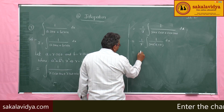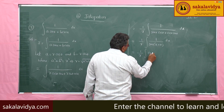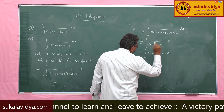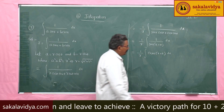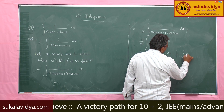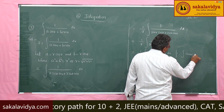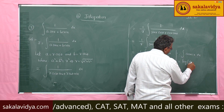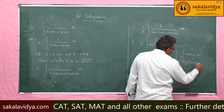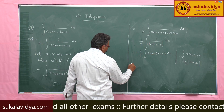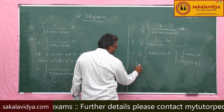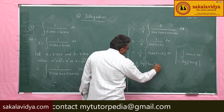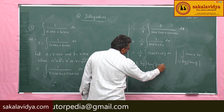This becomes 1/R times the integral of cosec(x + θ) dx. The integral of cosec x dx is log|tan(x/2)|. So this gives us 1/R · log|tan((x + θ)/2)| plus constant.